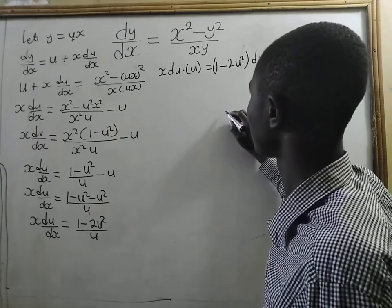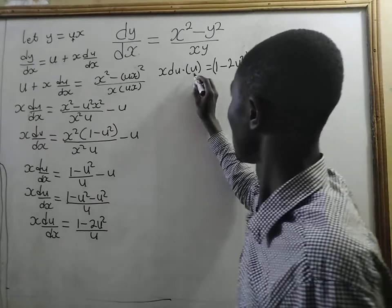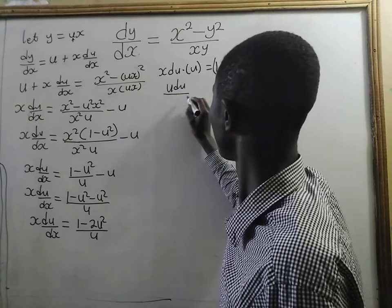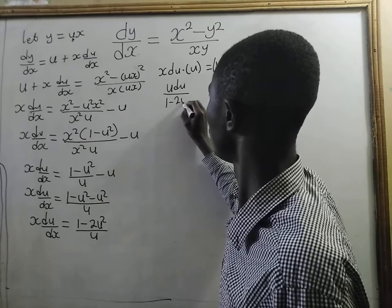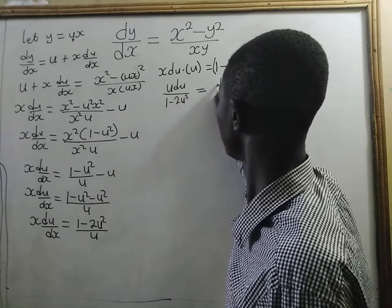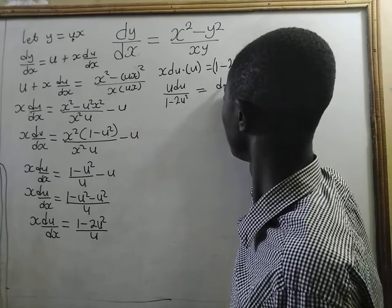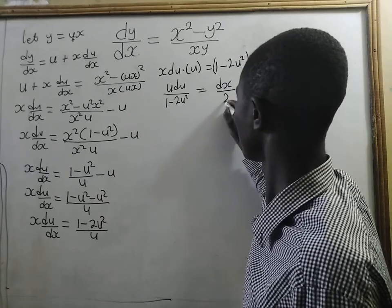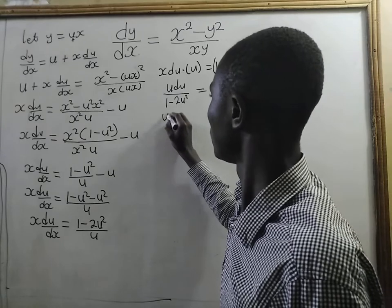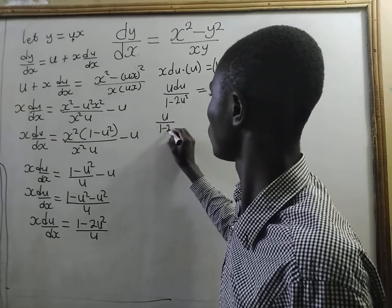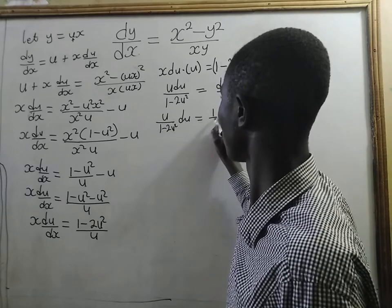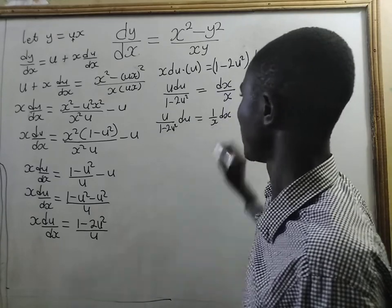Separating variables, we get u du divided by 1 minus 2u squared equal to dx on x. This is the same as u over (1 minus 2u squared) du equal to 1 on x dx. That's very great — so we integrate both sides.